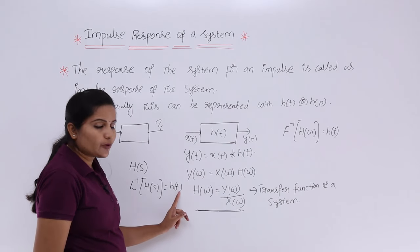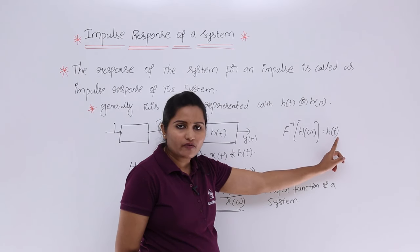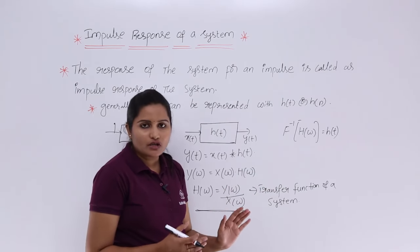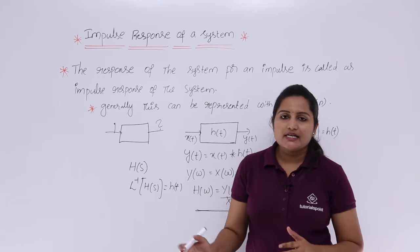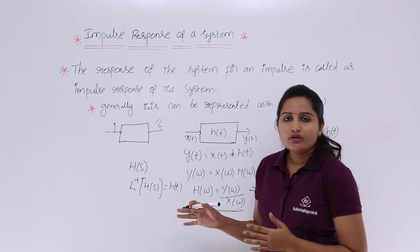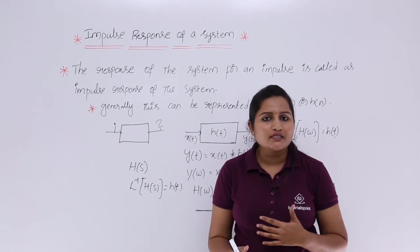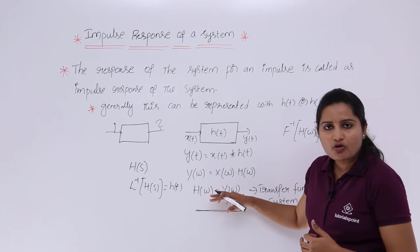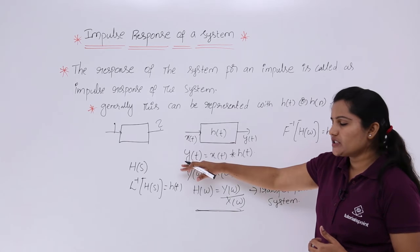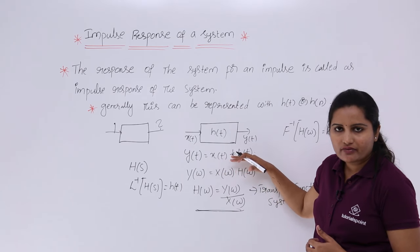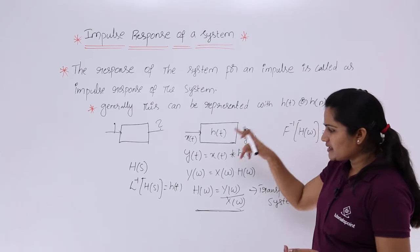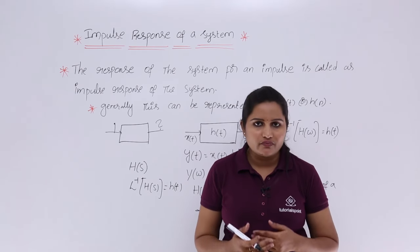Similarly, the inverse Fourier transform of H(ω) also gives h(t). So the impulse response is the response obtained by giving an impulse as input, and the transfer function is the Fourier or Laplace transform of the impulse response, equal to the output transform divided by the input transform. In the time domain, y(t) = x(t) convolved with h(t); in the frequency domain, Y(ω) = X(ω) · H(ω). Using these relations you can solve any question related to impulse response, transfer function, or transforms.